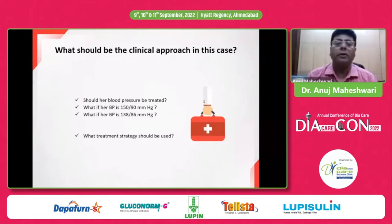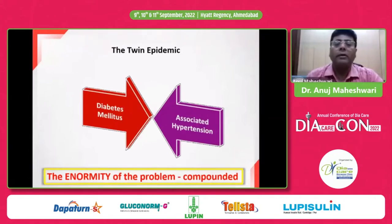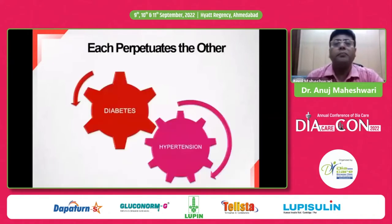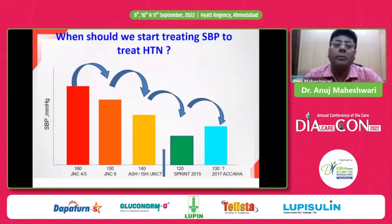We all know that diabetes and hypertension are running as a twin epidemic in our country as well as across the world. The enormity of the problem is that the effect of these two diseases is compounded whenever they are together — not one plus one equals two, but one plus one equals three. Each perpetuates the other; both are generated from the same soil, which is why they share similar complications and risk factors. The question is: when should we start treating systolic blood pressure?